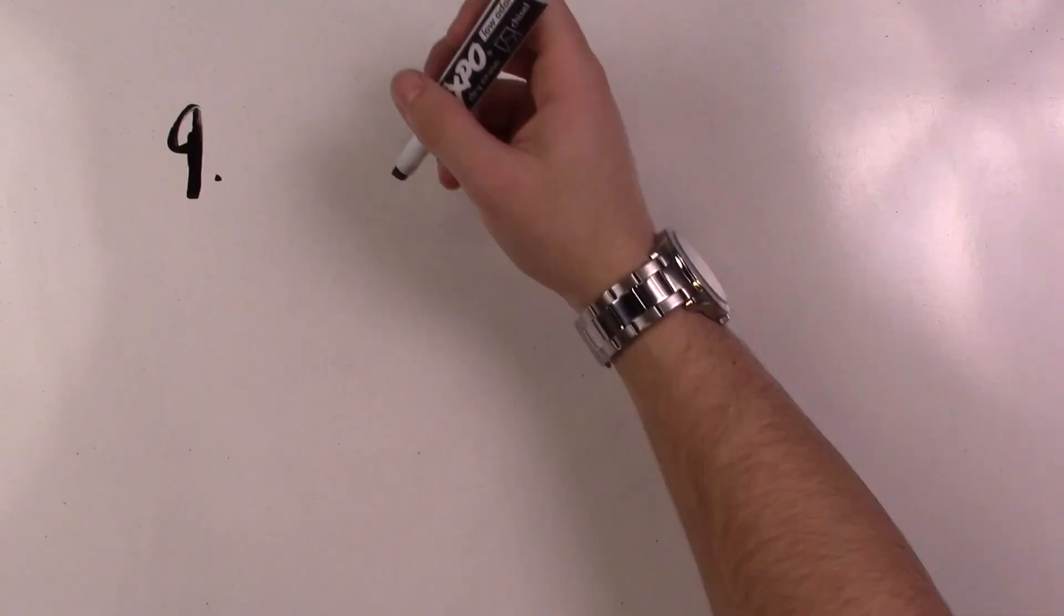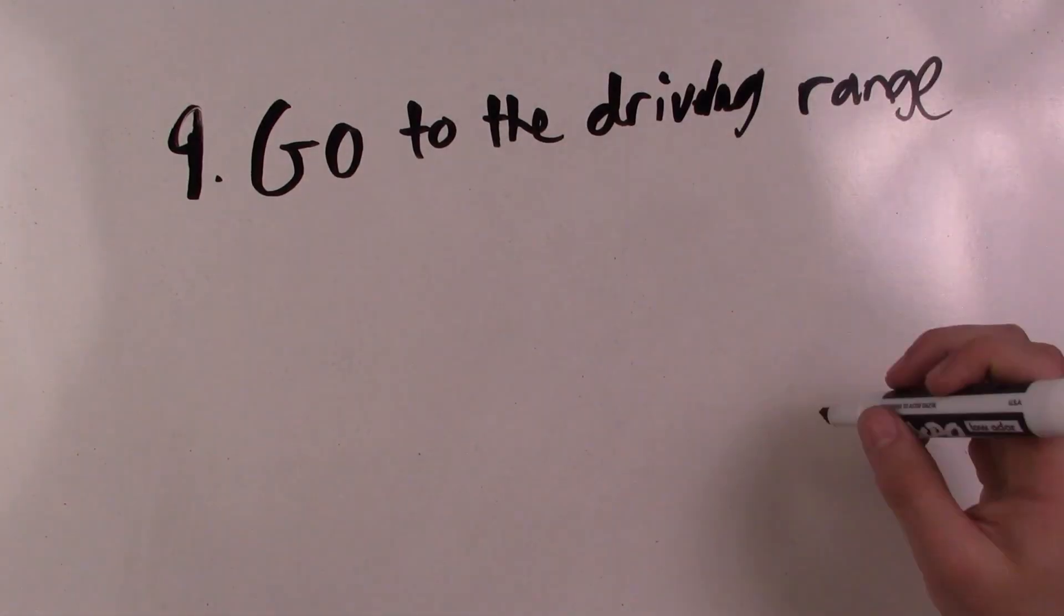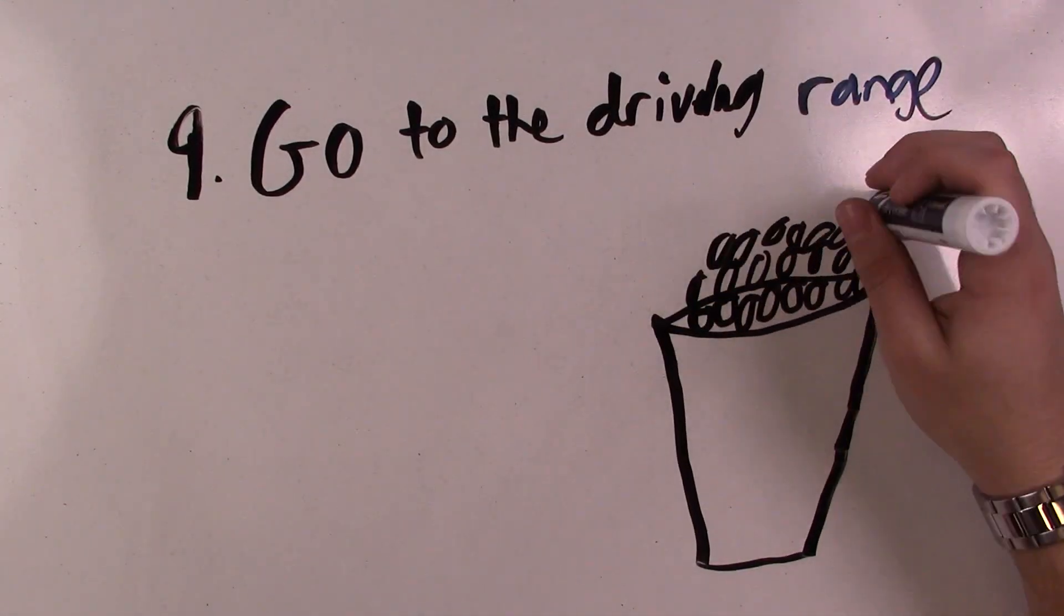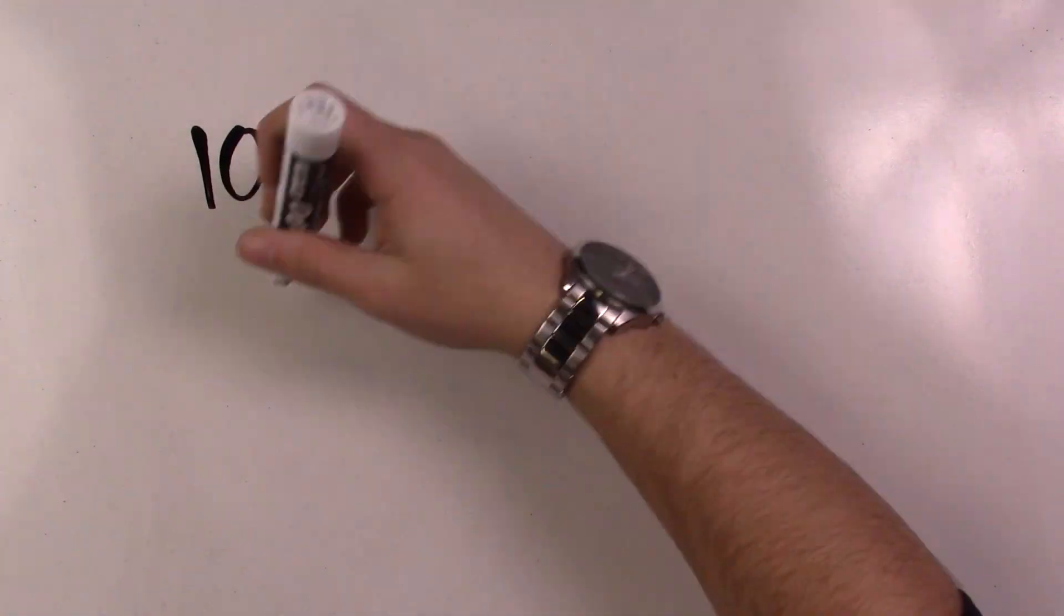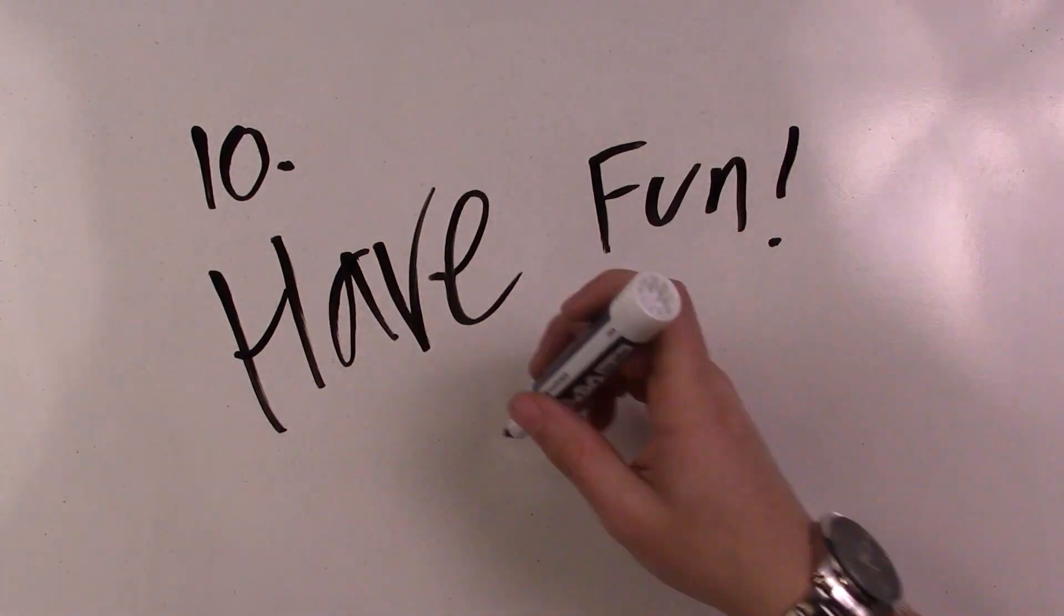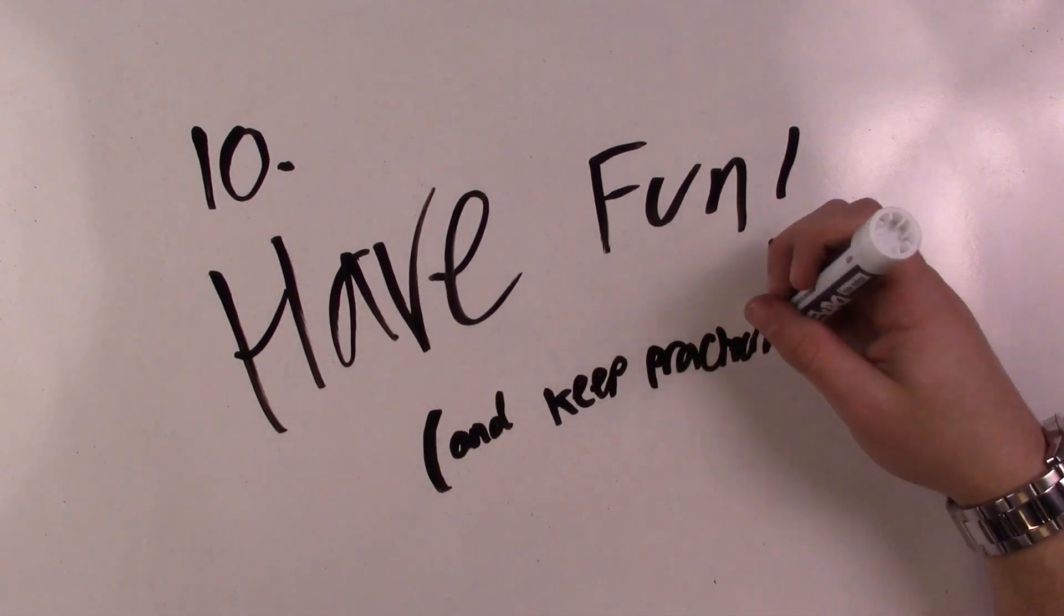Number nine: Try and get out to the driving range as much as you can. Hit a bucket or two, it's fun. Number ten: Make sure you enjoy what you're doing. Have fun, go out on the golf course and play with friends.